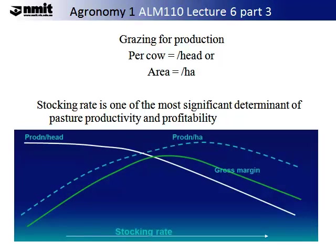When you are grazing for production you need to consider the number of cows and the area that you are going to graze these cows over. This is referred to as grazing for production per head or grazing for production per hectare. It is well known that stocking rate is one of the most significant determinants of pasture productivity and profitability, and this should be considered in your management.